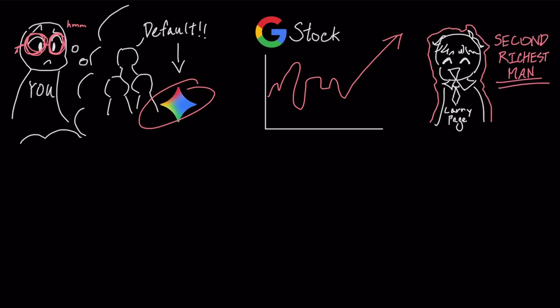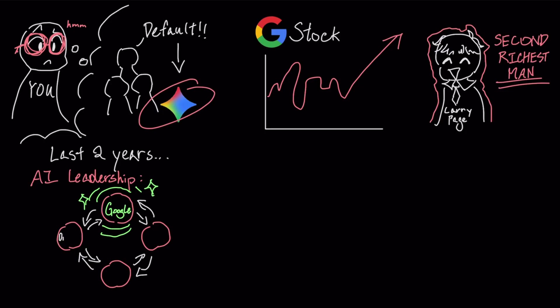But if you have been watching closely for the last two years, AI leadership has cycled between four giants. One releases a new model, takes the crown for a few months, and then the next one overtakes them. So, is this just Google's turn in the spotlight before OpenAI answers back?